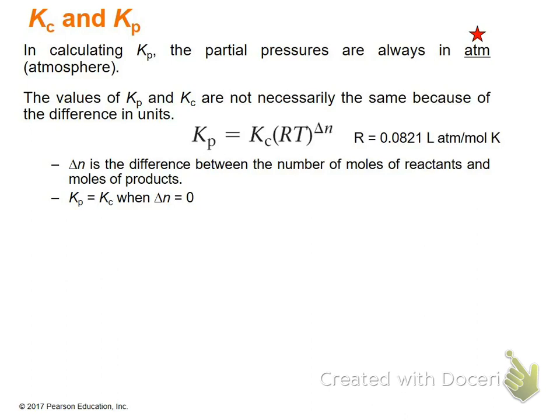You can convert between Kc and Kp using the equation Kp = Kc(RT)^ΔN, where R is 0.0821, T is temperature in Kelvins, and ΔN is the difference in the total moles of products minus moles of reactants. Kp equals Kc only when ΔN equals zero — meaning the total moles of products equals the total moles of reactants. Check whether this equation is on your formula sheet; if not, memorize it.